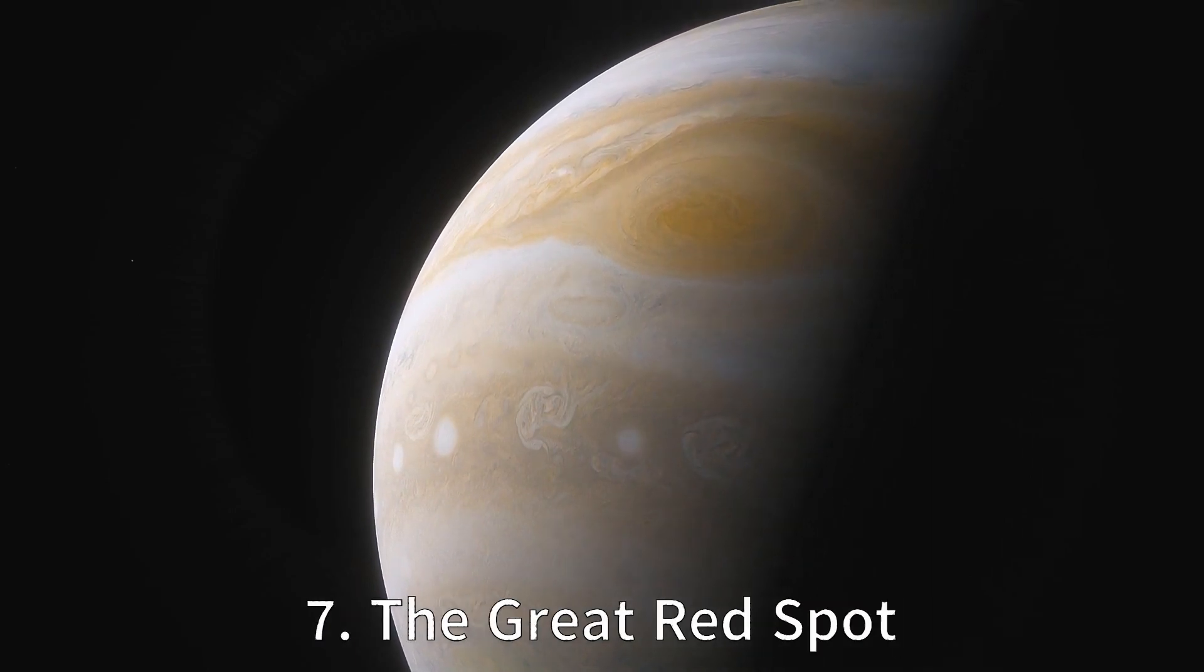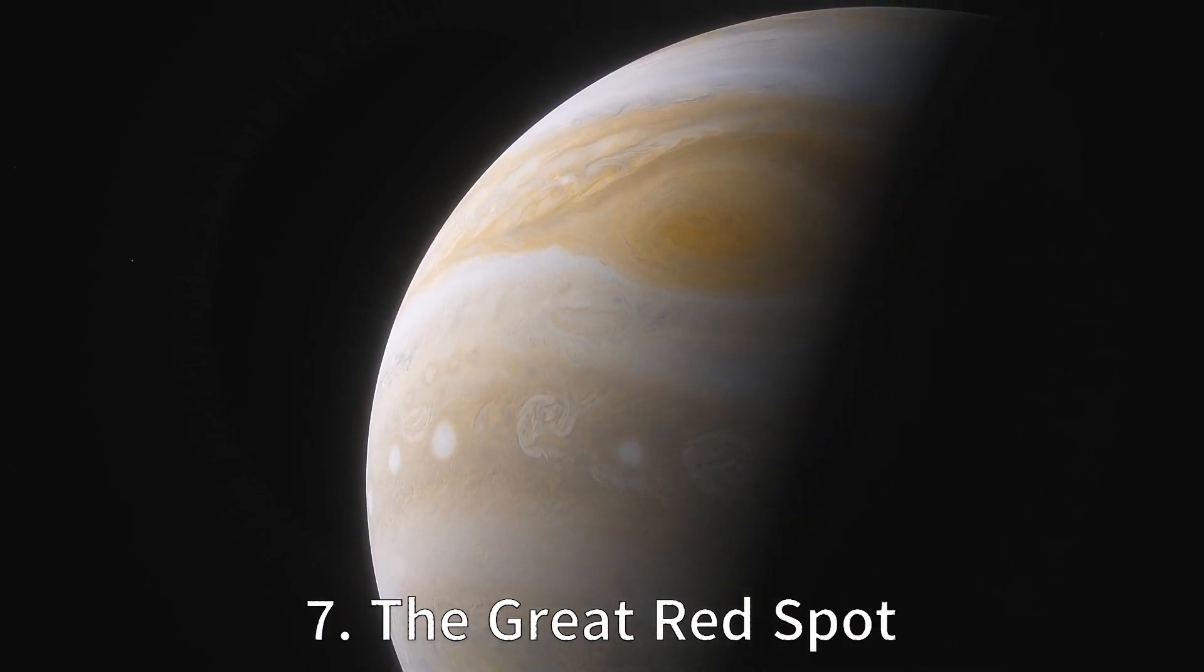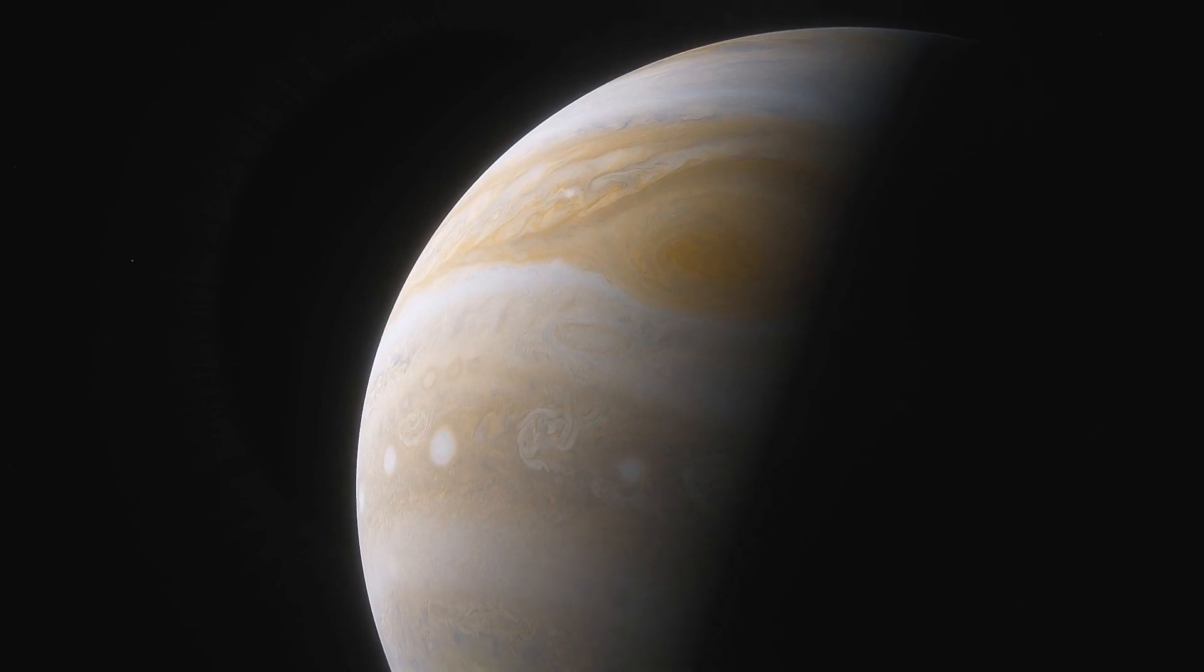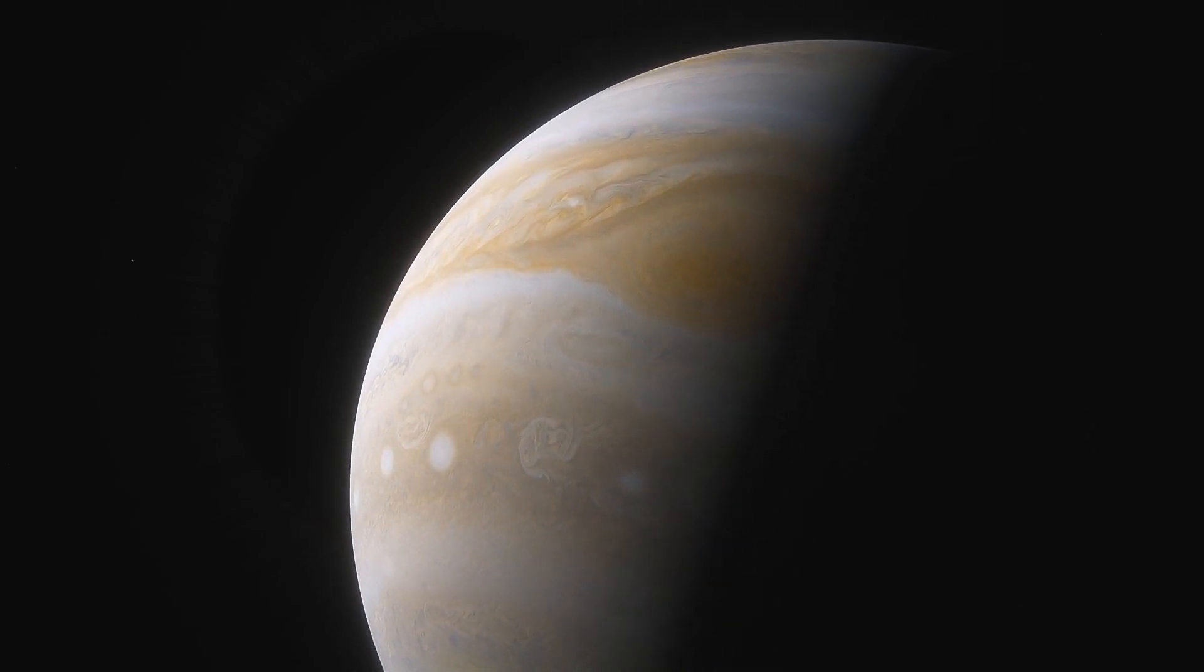The Great Red Spot is a massive storm on Jupiter that has been raging for over 300 years. It is about three times the size of Earth and can be seen from Earth with a telescope.